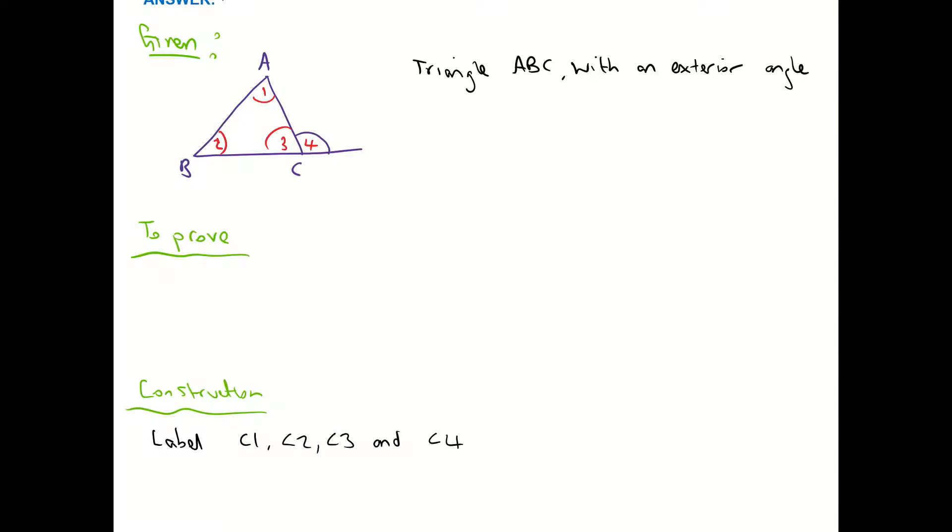That's all I wanted to do there. So what I want to prove is that angle four, that exterior angle, is equal to the sum of the two opposite interior angles, which in my diagram are one and two. Now yours could be labeled any way they want. I've just labeled them this way. So that's what we want to prove.